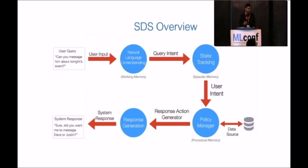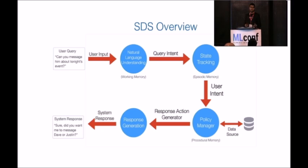Let's look a little deeper into the makeup of a spoken dialogue system. There are four key components: first, understanding a user's utterance; next, understanding where we are in the conversation; then making a decision on how to act based on this environment; and finally, responding to the user with another natural language utterance.